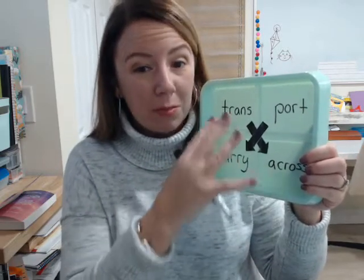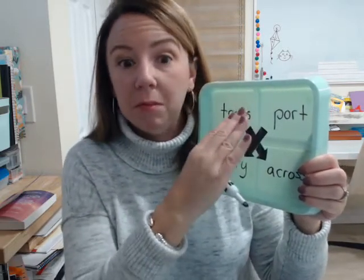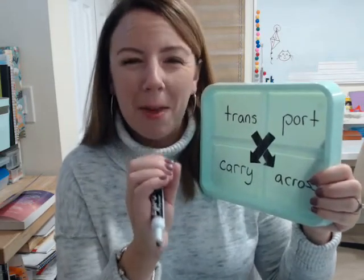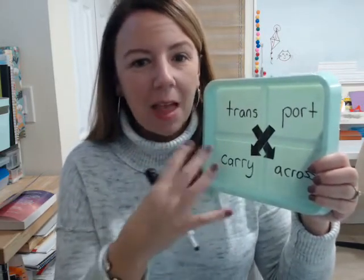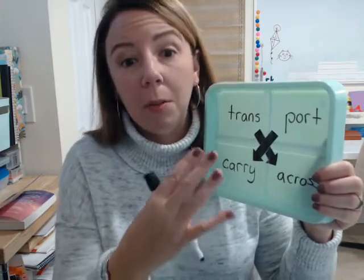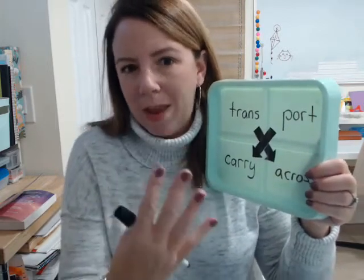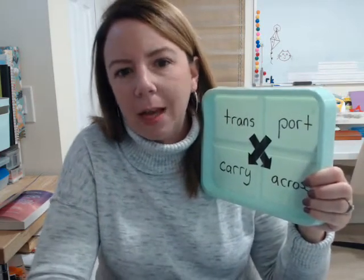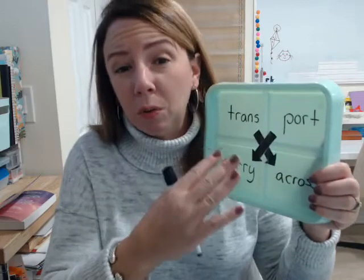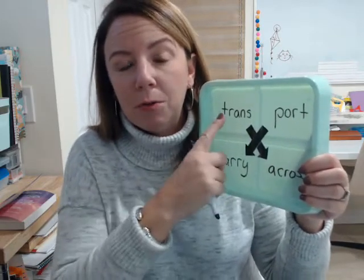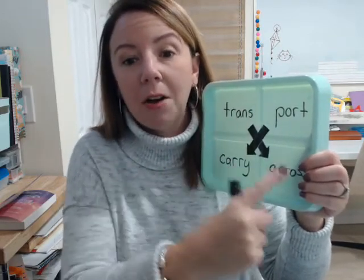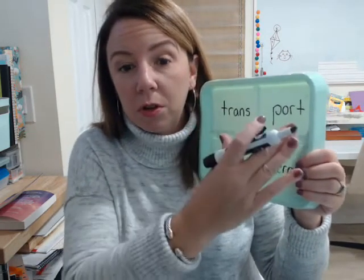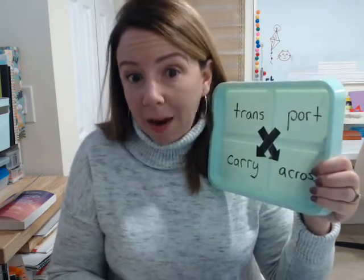Now we know sometimes when we put in different morphemes, the meaning may not be 100% apparent at that time. That may be due to an etymological change over time with the way we use certain morphemes — things have changed over time in history. But some of these are really clear cut. For instance, 'transport' meaning 'to carry across' is a very simple word for children to learn and use in their writing.